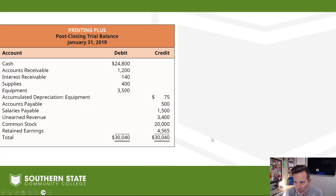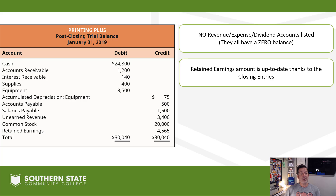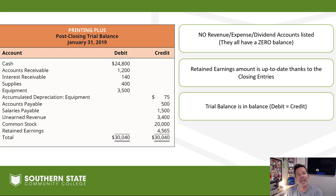So the post-closing trial balance — really nothing new as far as putting it together. No revenue, expense, or dividend accounts are going to be on it; they all have a zero balance and have been closed. Retained earnings is up to date thanks to the closing entries — we took income summary and dumped it into retained earnings, and when we closed dividends out to retained earnings it updated that account. And of course, it would not be a trial balance if the thing didn't balance — debits equal credits.